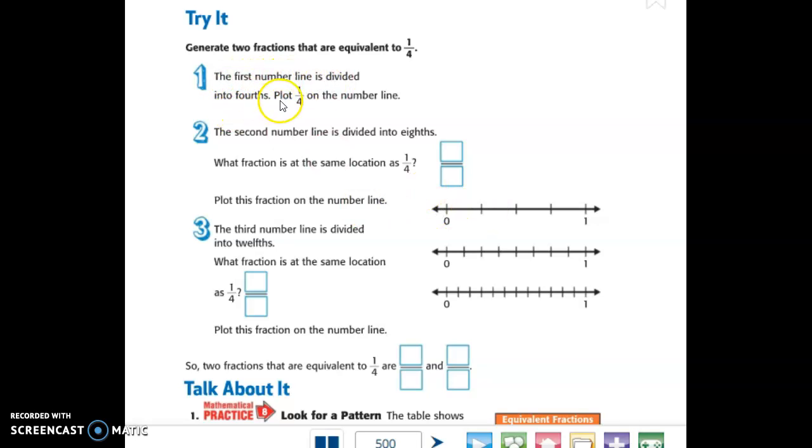The first number line is divided into fourths. Plot one-fourth on the number line. So here we've got zero. We've got one, two, three, four sections. So this first line is going to be one-fourth. My wonderful computer writing. Plot this fraction on the number line. The third number line is divided into twelfths. Sorry, I skipped a step. The second number line is divided into eighths. So we've got one-eighth. What would be equivalent? I'm going to try and write a little bit better for you. Not probably going to be successful.